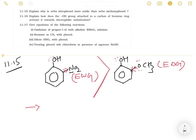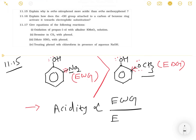In contrast, OCH3 donates electrons to oxygen, making the O-H bond stronger so it will not break easily, and acidity will be decreased. So we can write the point that acidity is proportional to electron withdrawing group and inversely related to electron donating group.